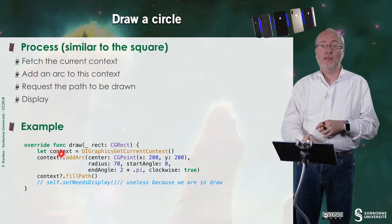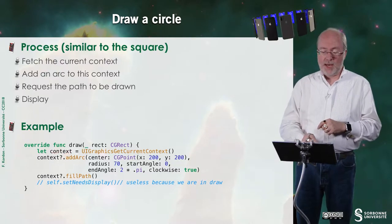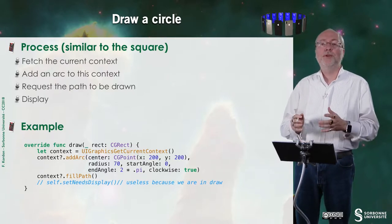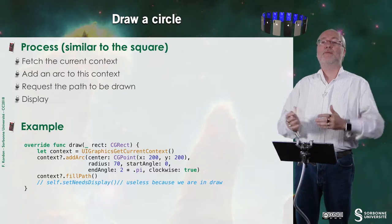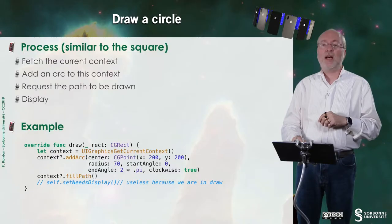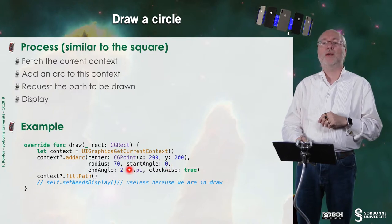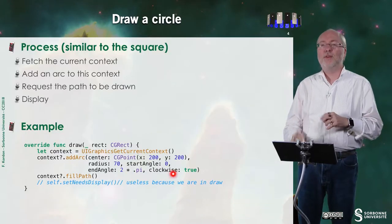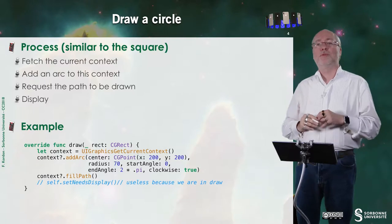So here we fetch the context, as previously. Here I add an arc. The arc has a center, which is a CG point. Then I have the radius of this arc. Then I have a start angle, which starts at zero and goes to 2 times pi. It can be less. Then I will have a portion of a circle. And then I decide the direction I want it to be drawn, clockwise or anticlockwise.